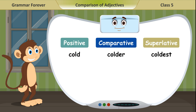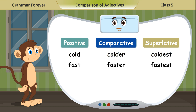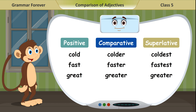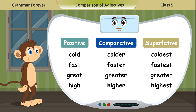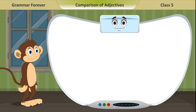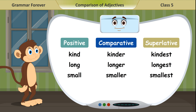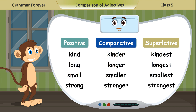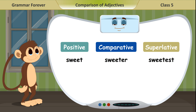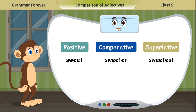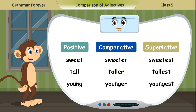Continued: Cold, colder, coldest. Fast, faster, fastest. Great, greater, greatest. High, higher, highest. Kind, kinder, kindest. Long, longer, longest. Small, smaller, smallest. Strong, stronger, strongest. Sweet, sweeter, sweetest. Tall, taller, tallest. Young, younger, youngest.